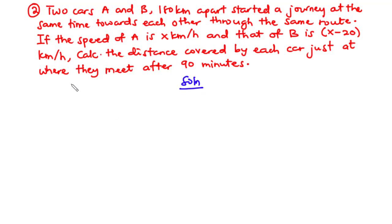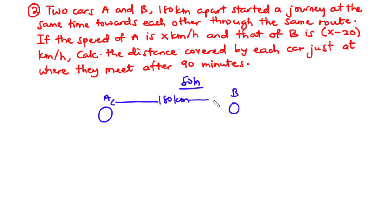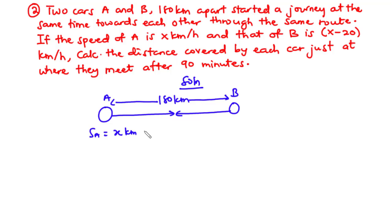We are told that there are two cars A and B which are 180 kilometers apart, and they started a journey moving towards each other through the same route. The speed of car A is x kilometers per hour and that of car B is x minus 20 kilometers per hour.